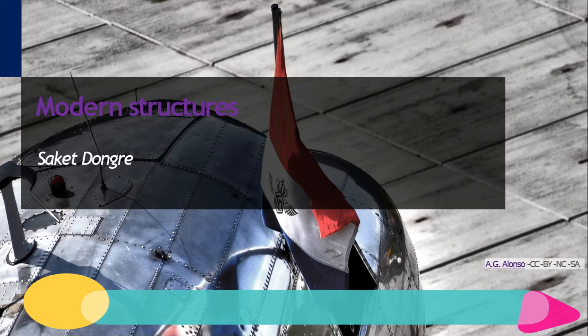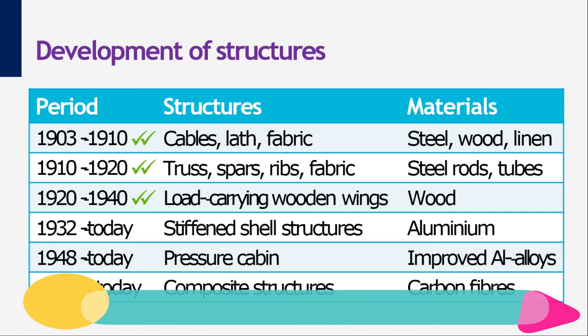This is the third lecture on structures. The topics will be metal structures and loads on structures. In the previous lectures we discussed the aircraft structures used in the first decades of the 20th century. Typical elements of those structures were trusses made up of wires, tubes, or bars, the use of linen for the skin, and wood used as material for wings. As you can see in the table, from the 1930s aluminum entered the aircraft industry.